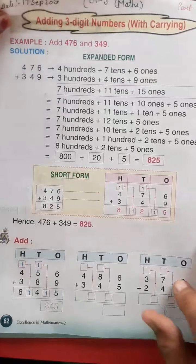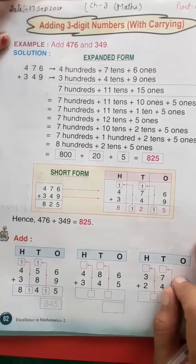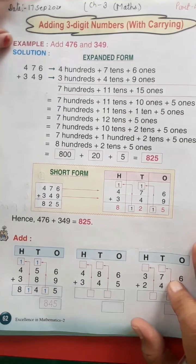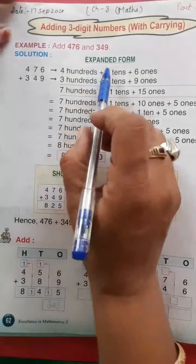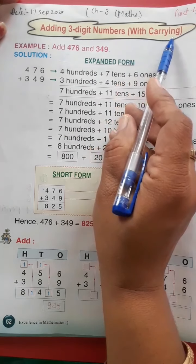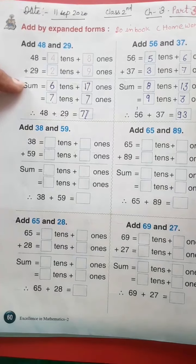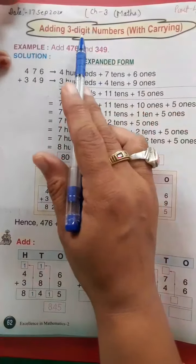Good morning students, how are you? Now page number 62 of your book, chapter 3. Adding three digit numbers with carrying. Abhi tak ham ne two digit numbers ke carrying wale sum padhe, ab ham three digit numbers with carry.